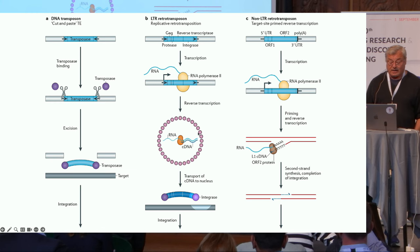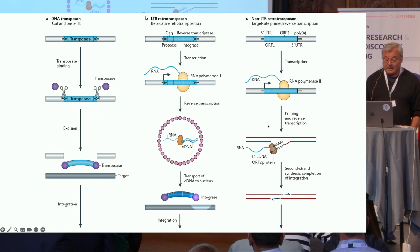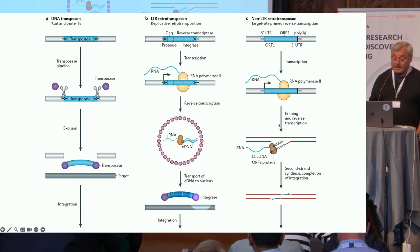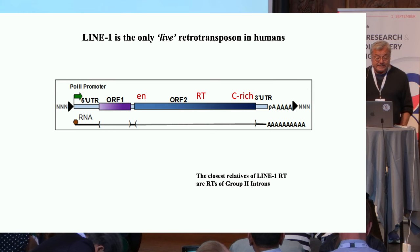What we have is retrotransposons, and they come in two flavors. The LTR retrotransposons, which are essentially the same as retroviruses. And then the appropriately and not very imaginatively named non-LTR retrotransposons, which are much more primitive and are also known as the LINE elements.